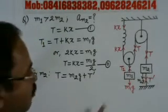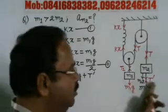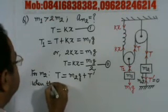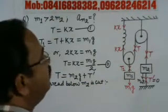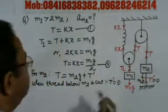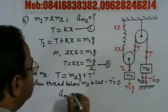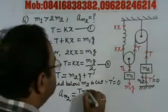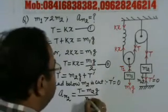When this thread is cut — when the thread below m2 is burned — T_dash becomes 0. At that very moment, the acceleration of m2 equals the net upward force divided by mass. The net upward force is T minus m2g, and the mass is m2.